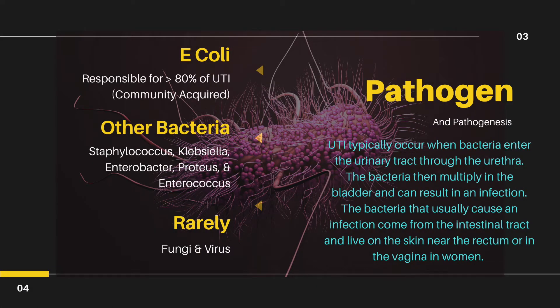When it comes to the pathogen, the one you must remember is E. coli, because it is responsible for more than 80% of urinary tract infections. Bacteria like Staphylococcus, Klebsiella, Enterobacter, Proteus, and Enterococcus are rarely involved in causing urinary tract infections.